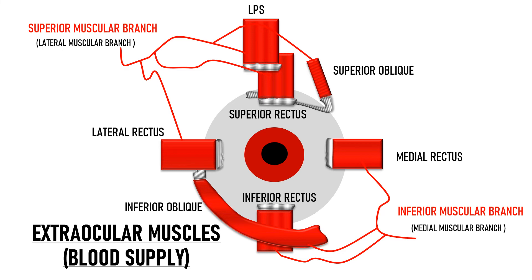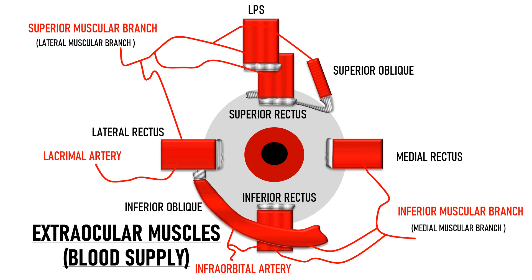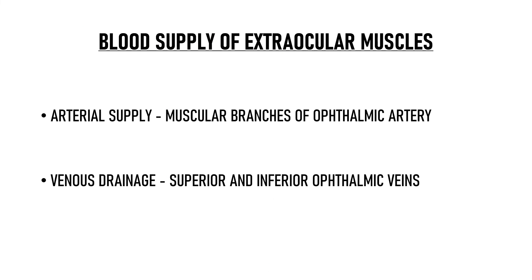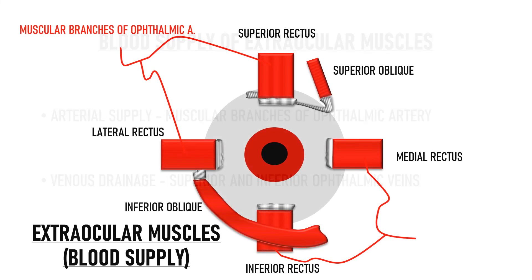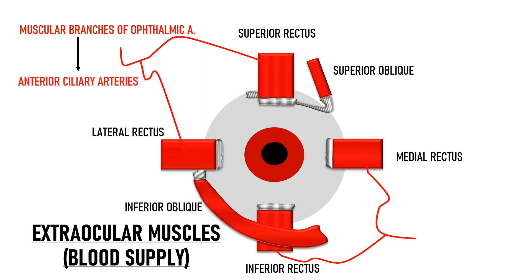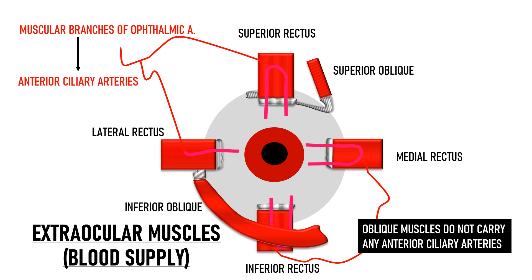The lateral rectus also receives blood supply from the lacrimal artery, while the inferior oblique and inferior rectus receive partial supply from the infraorbital artery — a branch of the maxillary artery from the external carotid. Venous drainage goes into the superior and inferior ophthalmic veins. These muscular branches give rise to anterior ciliary arteries carried by the recti. The superior, inferior and medial recti carry two anterior ciliary arteries each, while the lateral rectus carries only one. The oblique muscles carry none.